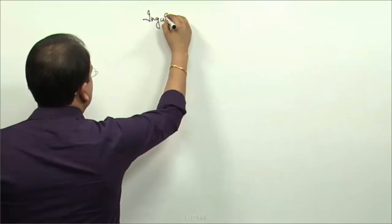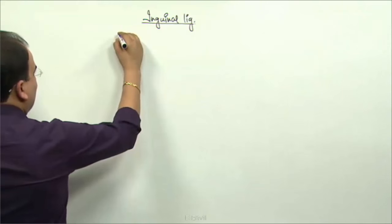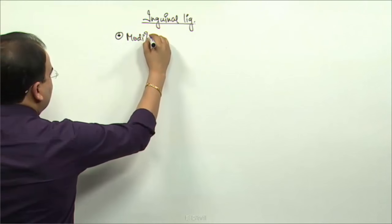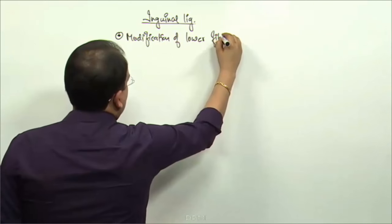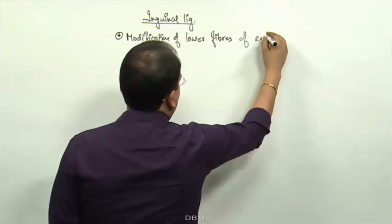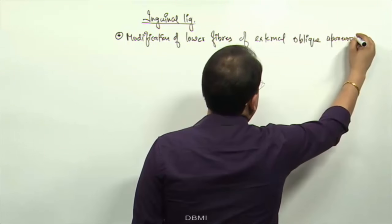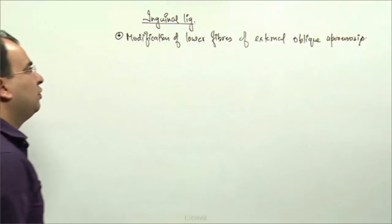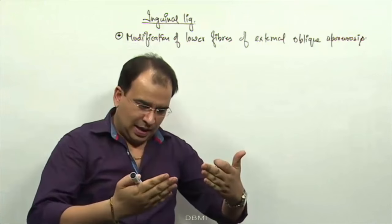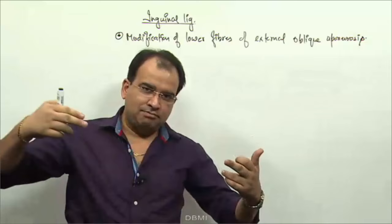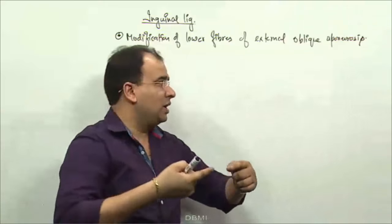Let us talk about the inguinal ligament first. The inguinal ligament is a modification of the lower fibers of external oblique aponeurosis. The external oblique aponeurosis muscle will come down, and between the pubic tubercle and the anterior superior iliac spine, it will get folded above. That fold is called the inguinal ligament.